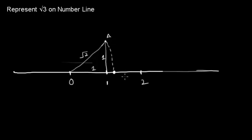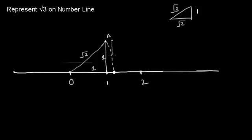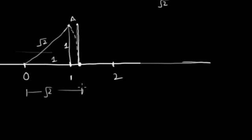Now that we have root 2, we can easily find root 3 by drawing another triangle. This triangle has one side as root 2 and another side as 1 unit in height, so its hypotenuse will be root 3. If we draw this same hypotenuse length on the number line, it will mark root 3.